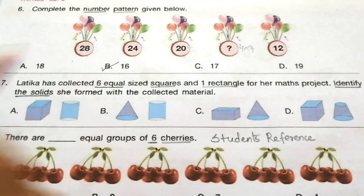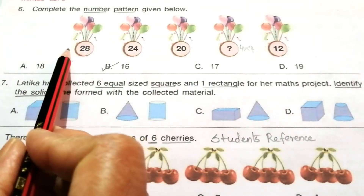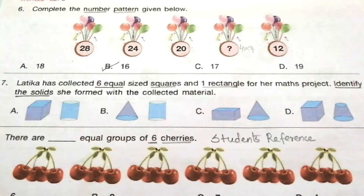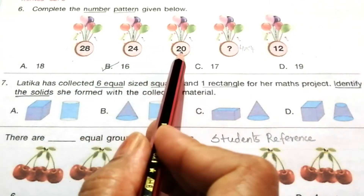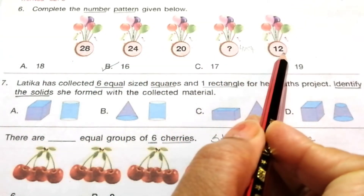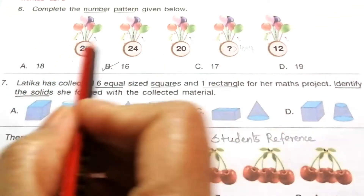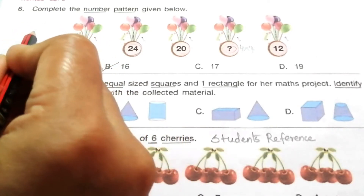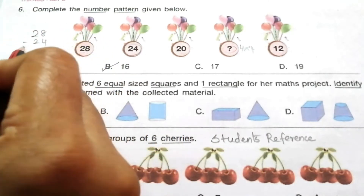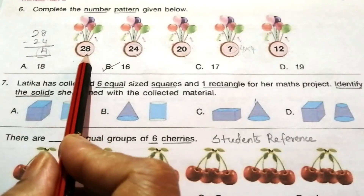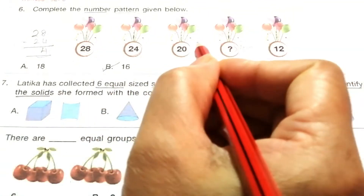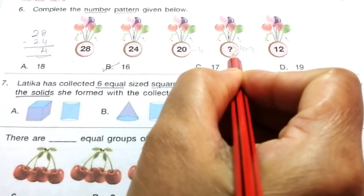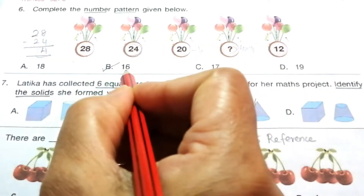We can also find the answer another way by looking at the pattern from left to right. The numbers go in decreasing order: 28, 24, 20, ?, 12. Subtracting the second from the first: 28 minus 24 equals 4. The pattern decreases by 4 each time, so subtract 4 from 20 to get 16. So the answer is 16.